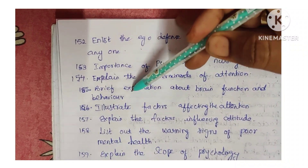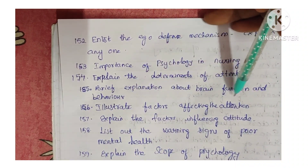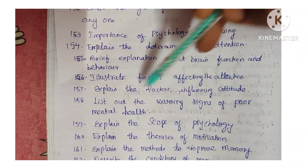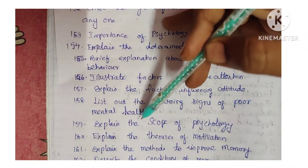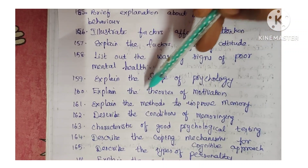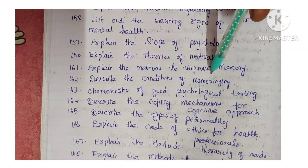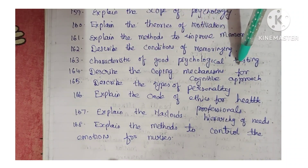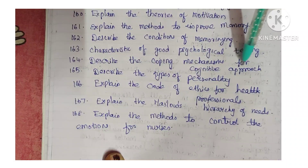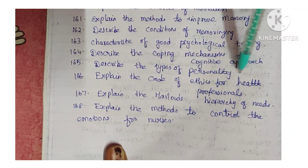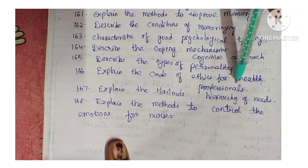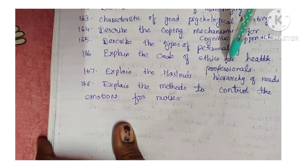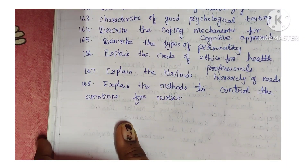Next: explain the determinants of attention. Next: brief explanation about brain function and behavior. Next: illustrate factors affecting attention. Next: explain the factors influencing attitude. Next: list out the warning signs of poor mental health. Next: explain the scope of psychology and the theories of motivation. Next: explain methods to improve memory. Next: describe conditions of memorizing. Next: characteristics of good psychological testing. Next: describe coping mechanism for cognitive approach. Next: describe types of personality. Next: explain the code of ethics for health professionals. Next: explain Maslow's hierarchy of needs. Next: explain methods to control emotions for nurses.